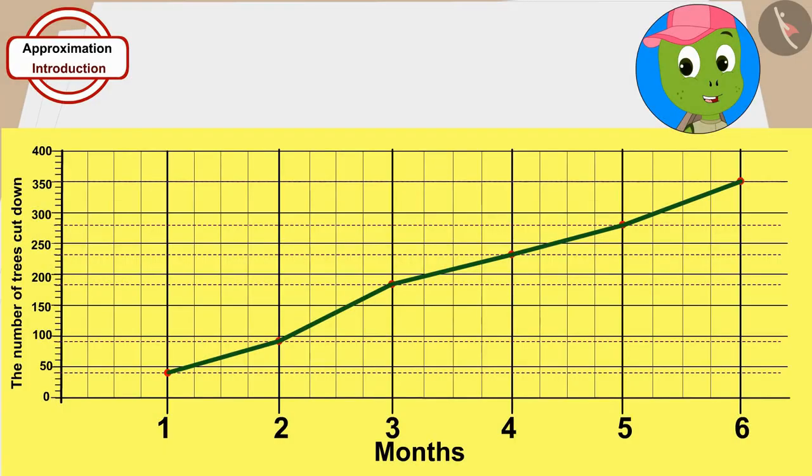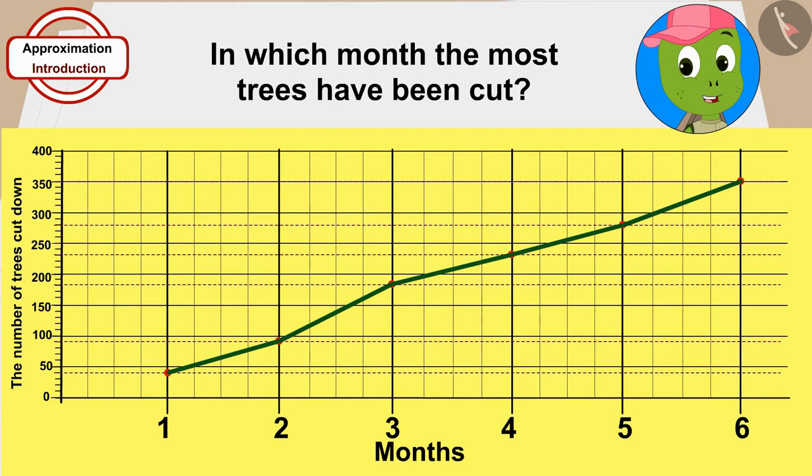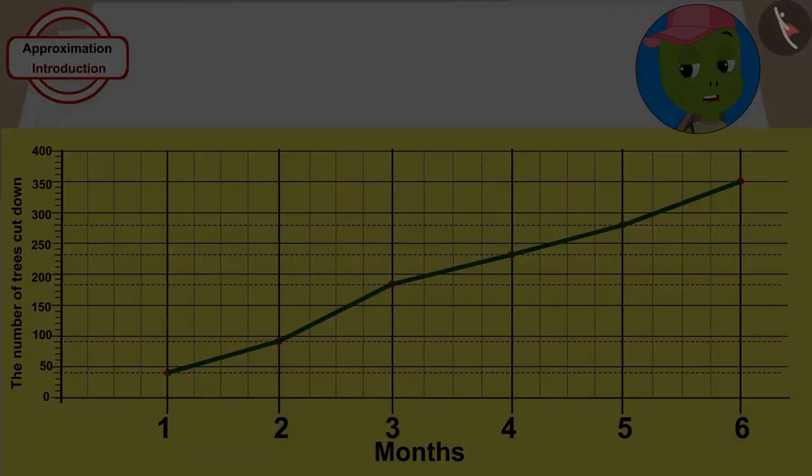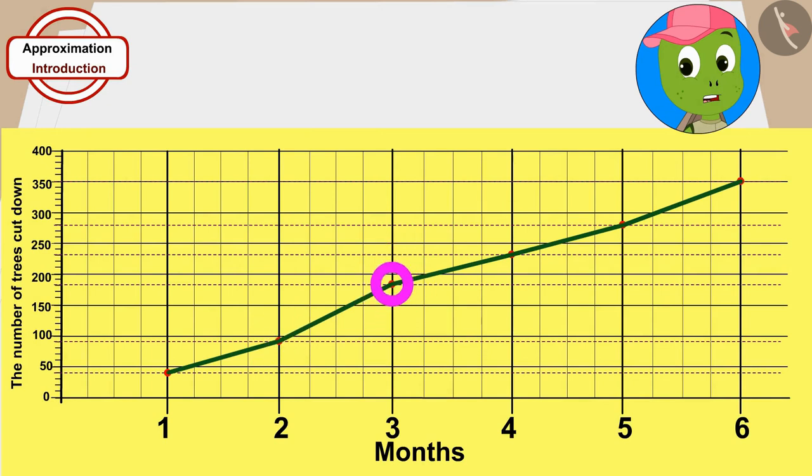Children, by looking at this chart, can you tell in which month the most trees have been cut? There is maximum difference between the dots of the 2nd and 3rd months. So, the maximum trees were cut in the 3rd month.